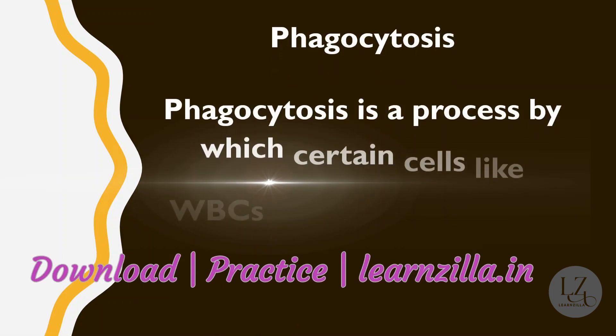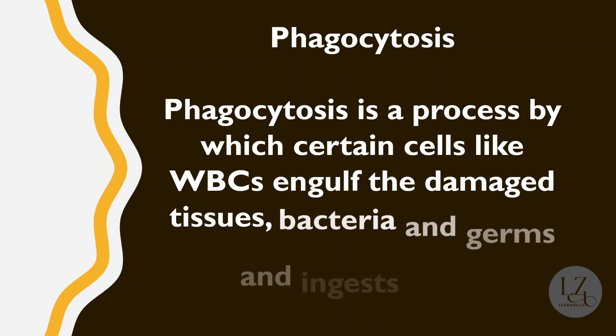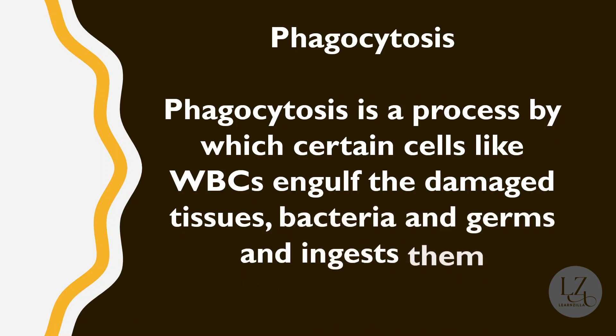Phagocytosis is a process by which certain cells like WBCs engulf damaged tissues, bacteria, and germs and ingest them — that is, eat them away.